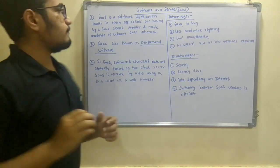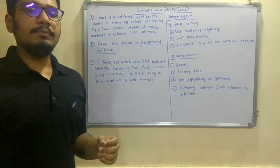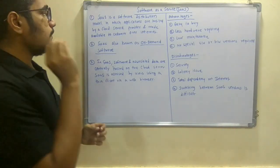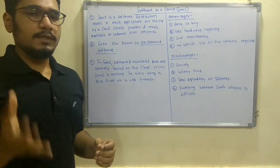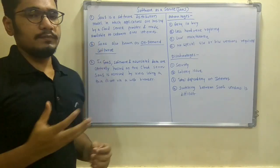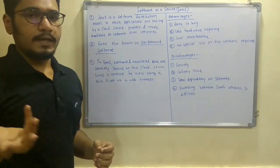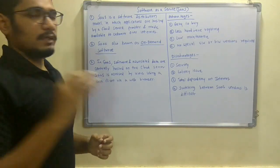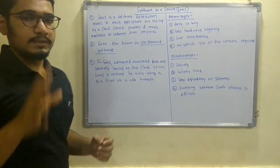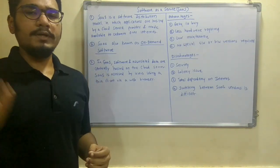Going to the definition: SaaS is a software distribution model in which applications or services are centrally hosted by a cloud service provider and made available to customers over the internet at a fixed price. SaaS is also called on-demand software, meaning you can purchase different kinds of software on demand and use them as per your requirements.